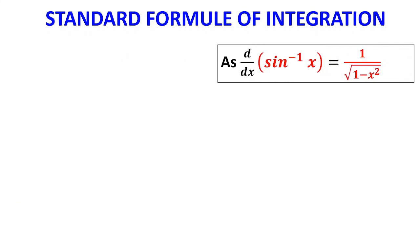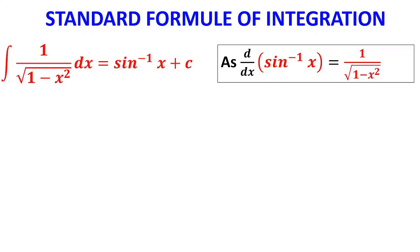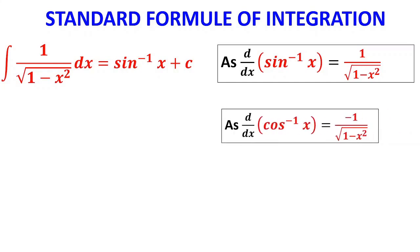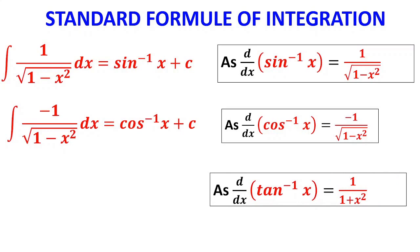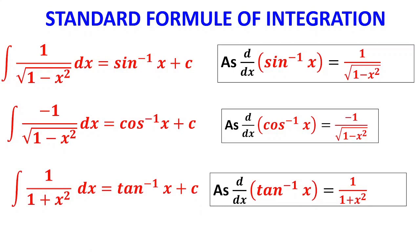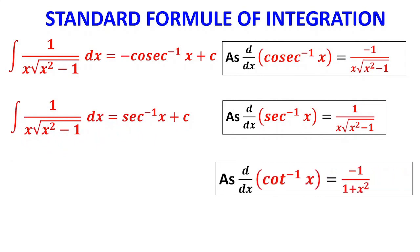Now we look at direct formulas from inverse trigonometric functions. Differentiation of sin⁻¹x is 1/√(1−x²), therefore ∫1/√(1−x²) dx = sin⁻¹x + c. Differentiation of cos⁻¹x is −1/√(1−x²), therefore ∫−1/√(1−x²) dx = cos⁻¹x + c. Differentiation of tan⁻¹x is 1/(1+x²), therefore ∫1/(1+x²) dx = tan⁻¹x + c. Similarly we can derive formulas for cosec⁻¹x, sec⁻¹x, and cot⁻¹x.